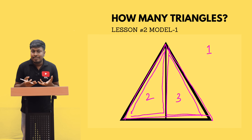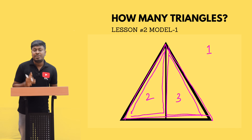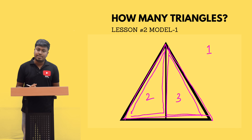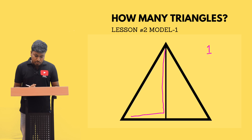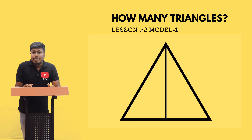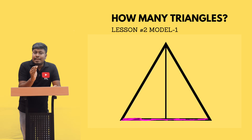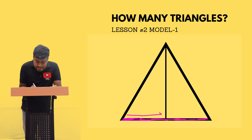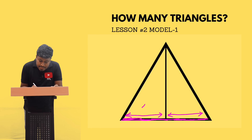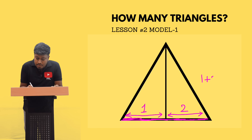Manual calculation is easy, but in exams they usually give tough questions, so you need a technique. If a triangle is given, look at the baseline — the bottom line of the triangle. This baseline is separated into two regions: region one and region two. Now add 1 plus 2, which gives 3. So in the given image there are three triangles.